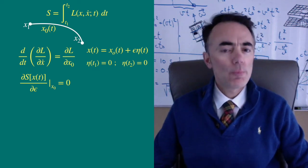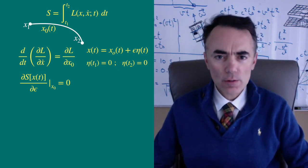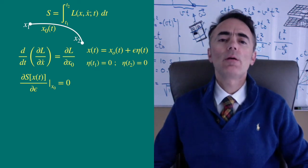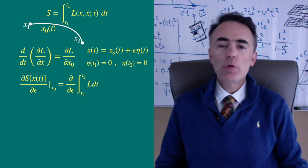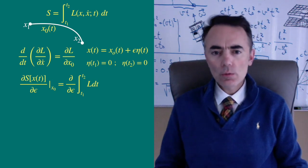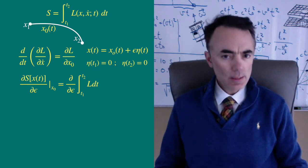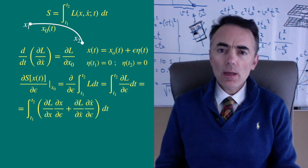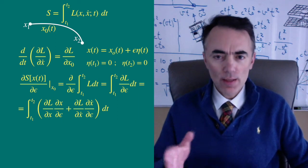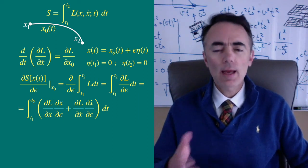So the partial of action of x of t with respect to epsilon is the partial with respect to epsilon of the integral between t1 and t2 of L dt, which using the chain rule we get. Epsilon affects the action through its dependence by x and x dot.